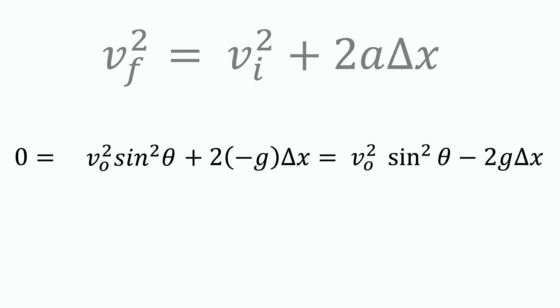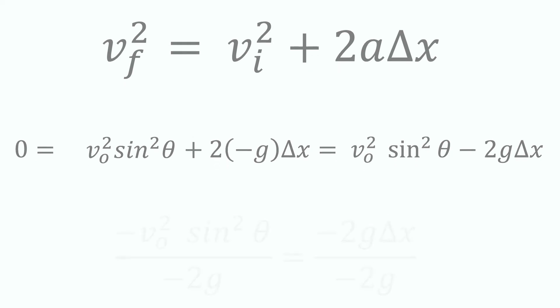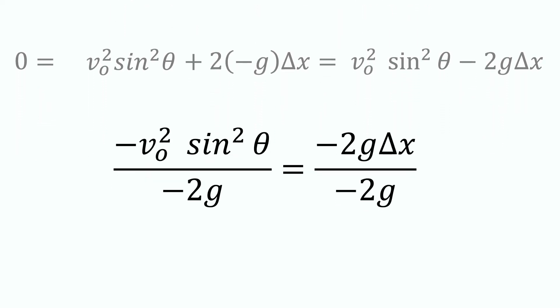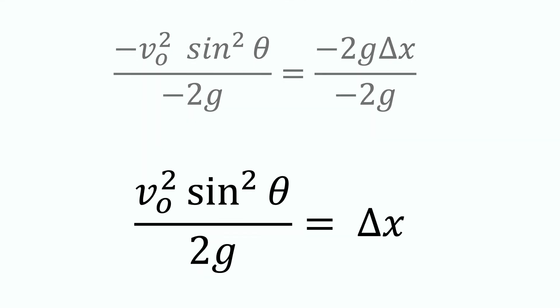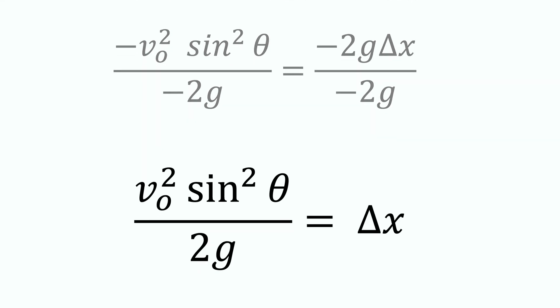I will subtract v naught squared sine squared theta from both sides of the equation and get negative v naught squared sine squared theta equals negative 2g delta x. Dividing through by negative 2g, I will get v naught squared sine squared theta over 2g equals delta x, maximum height achieved by the projectile.